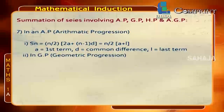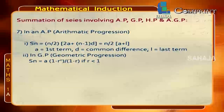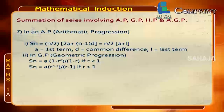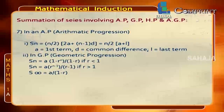In a geometric progression (GP), Sn = a(1 − rⁿ)/(1 − r) if r < 1, and Sn = a(rⁿ − 1)/(r − 1) if r > 1. The sum to infinity S∞ = a/(1 − r). Here, a is the first term and r is the common ratio.